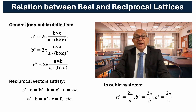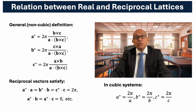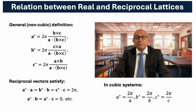Crystals can have many different lattice symmetries, and not all of them are cubic. Their real space lattice vectors A, B, and C are often unequal and not mutually perpendicular. In such non-cubic systems, the reciprocal lattice is defined through vector cross products of the real lattice basis vectors.